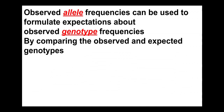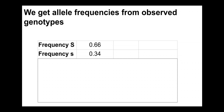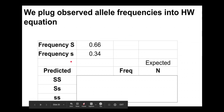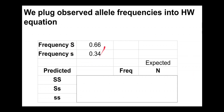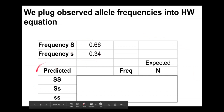We now have observed allele frequencies and can plug those into the Hardy-Weinberg equation, which allows us to formulate expectations about what the genotype frequencies should be. We compare the actually observed genotype frequencies to those predicted using our allele frequencies, and that will tell us whether the population is in Hardy-Weinberg equilibrium and what type of evolutionary force might be occurring.